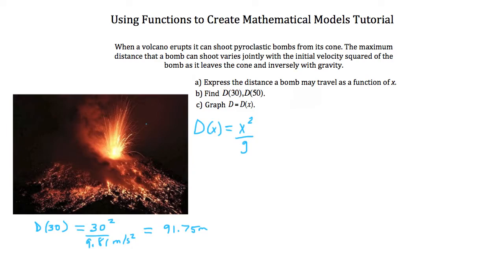Pyroclastic bombs are these pieces being ejected from the volcano. You can get some really large ones, from as small as a football to the size of a desk being ejected from the cone of a volcano. This particular pyroclastic bomb, if it were ejected at a velocity of 30 meters per second, is going to travel roughly the length of a football field, which is pretty far. Now let's take a look at how far it would travel if it were going slightly faster.